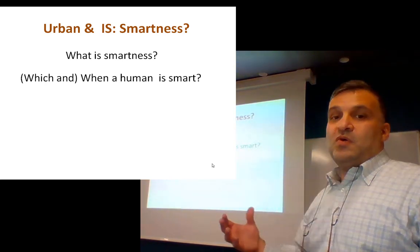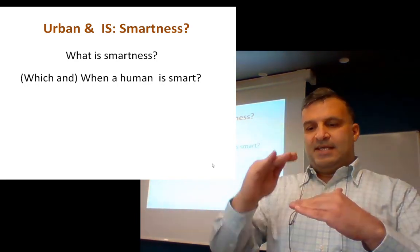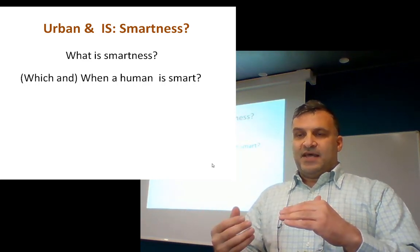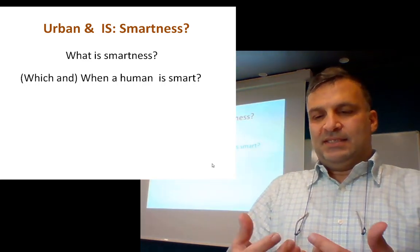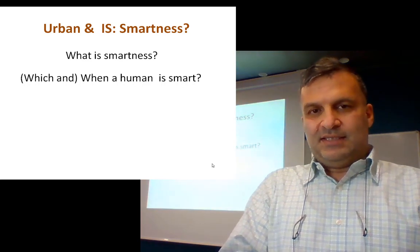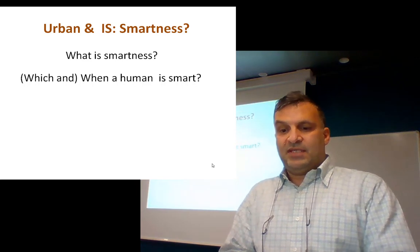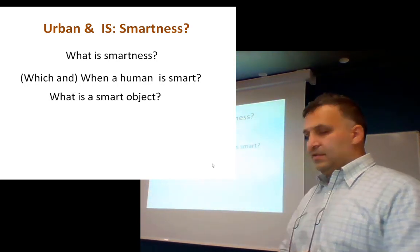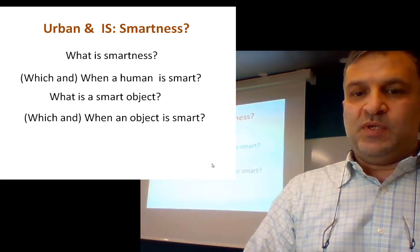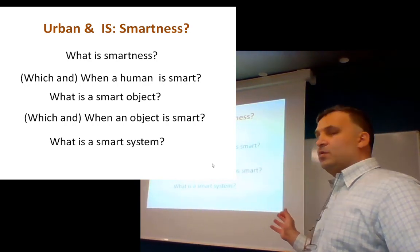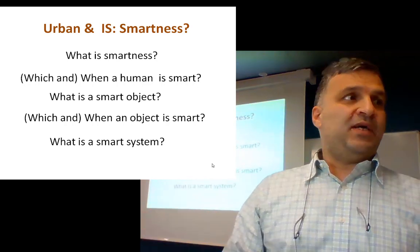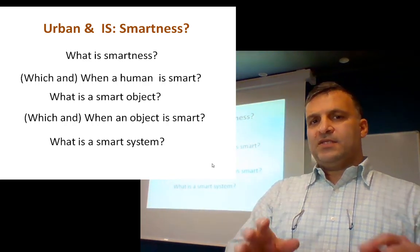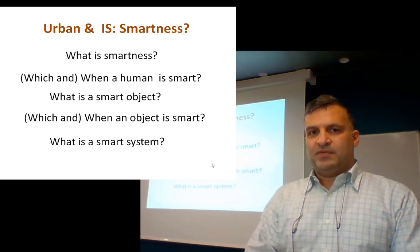What is smartness? Even a so-called stupid person has different degrees of smartness. When we talk about an object, we cannot really say that an object is smart because someone injects the smartness inside it. It is a question related to the understanding of the environment. What is a smart object? When and which object is smart? What is a smart system? I will give you five minutes to discuss this topic with your group, then we will continue.